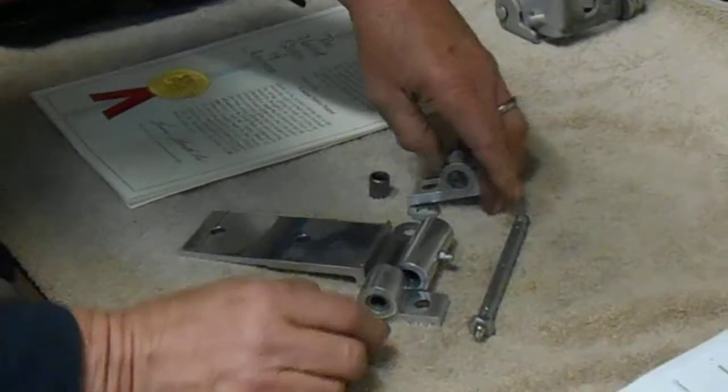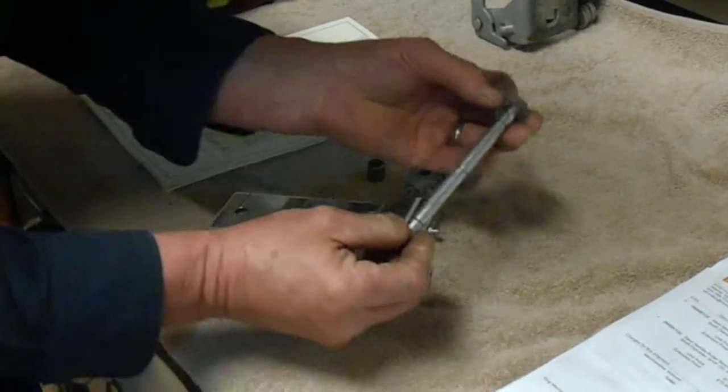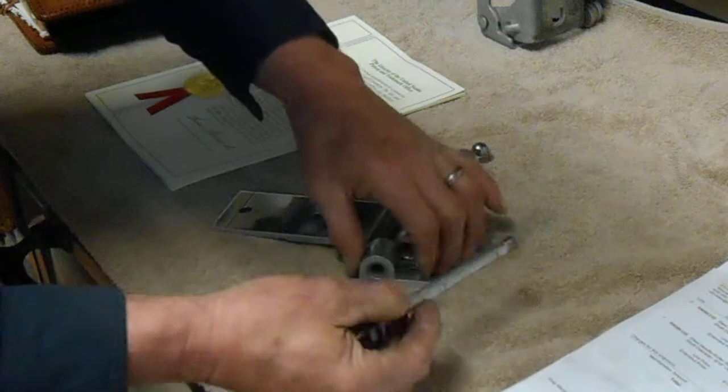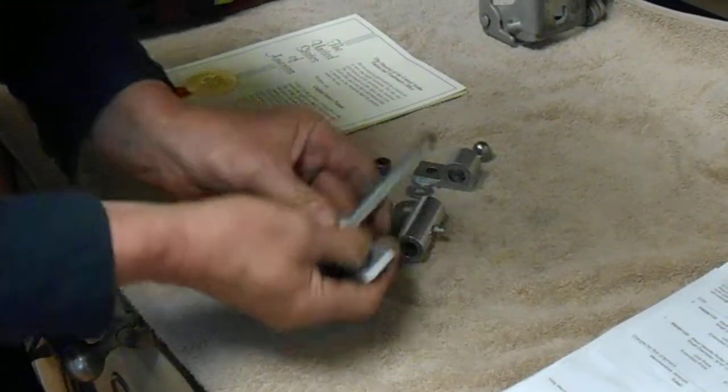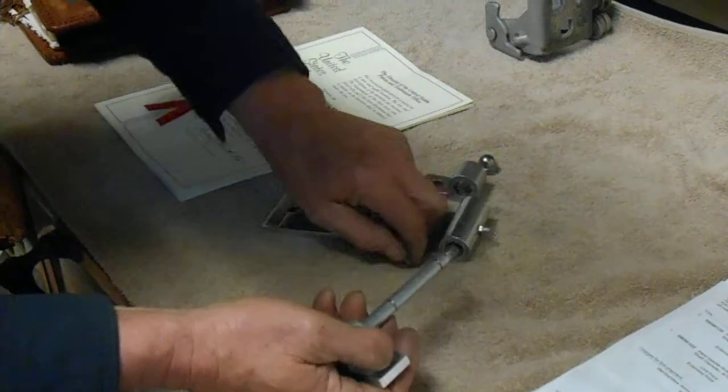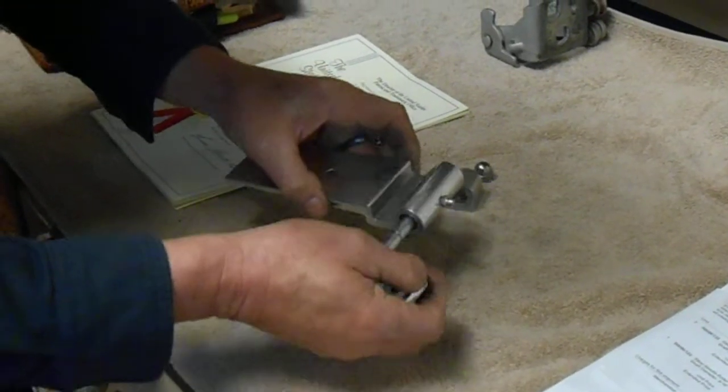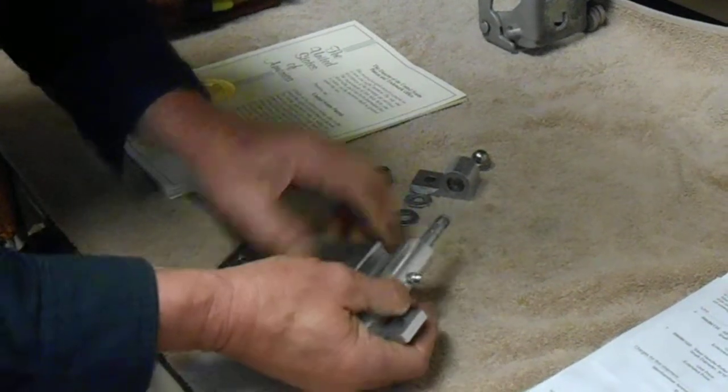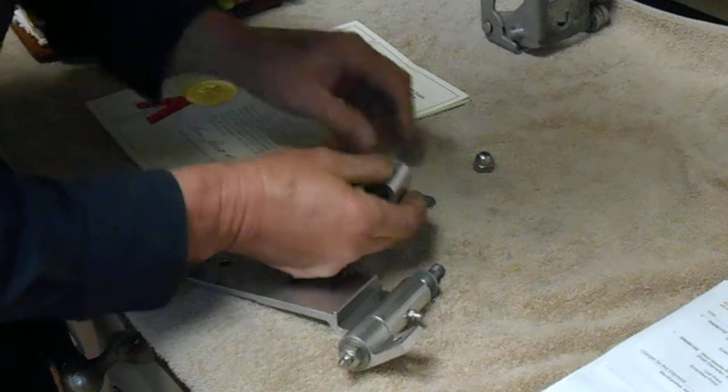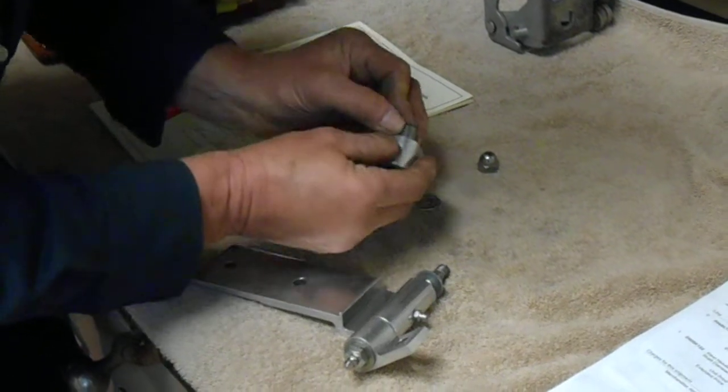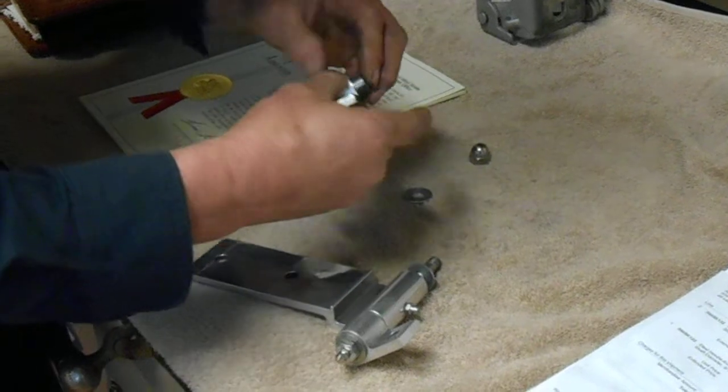Now let's go ahead and put it back together real fast because we're running out of time. We're going to slip her back together. I got to watch because we'll tear our seals up. We're going to put her back together and then we're going to get into the cost of this operation. There's always a cost to any operation that you do.